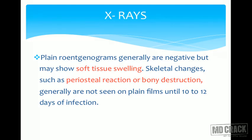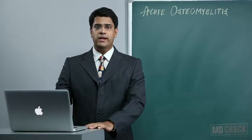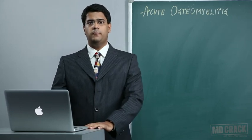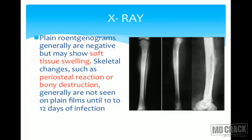X-rays should always be performed. Plain radiographs are generally negative in these conditions but do show soft tissue swelling. Skeletal changes such as periosteal reaction or bony destruction are generally not seen on plain films until 10 to 12 days of infection. A slight periosteal reaction may be picked up in acute osteomyelitis after a couple of days. The soft tissue swelling and periosteal reaction around the affected bone area can be identified on x-ray.